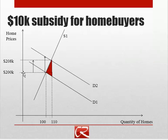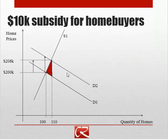On the other hand, if the supply curve had been 100% horizontal, then we would have had no change in price but a large change in quantity. So generally speaking, the slope of the supply curve is going to tell us how much of the subsidy goes to pushing up prices and how much goes to pushing up quantity.